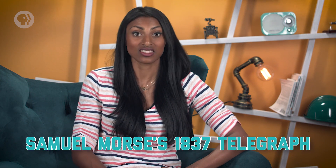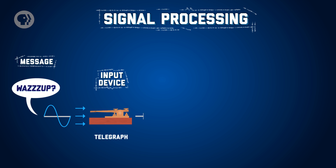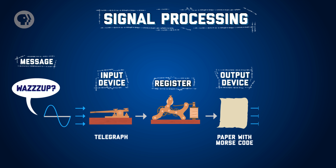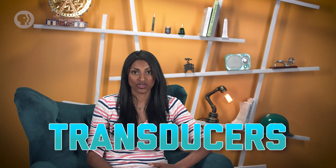We saw an example of this in the history of electrical engineering, with Samuel Morse's 1837 Telegraph. In his design, the operator pushed down a lever, called a key, to complete a circuit and transmit an electric current down a wire. At the other end, a machine called a register would receive that current and mark a piece of paper. By pressing down the key for different lengths of time, the operator could make the register draw little dots and dashes that spelled out a message. The key and register in Morse's Telegraph are both examples of what are called transducers. Transducers take physical information, like the operator's press of the lever, and turn it into a signal, or vice versa.